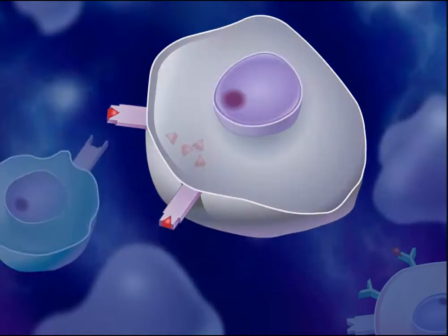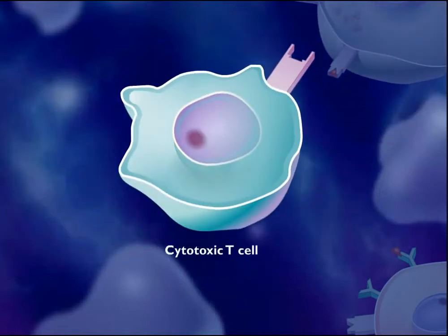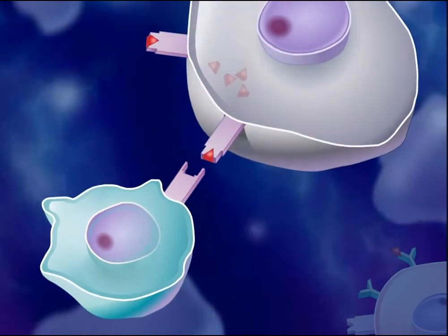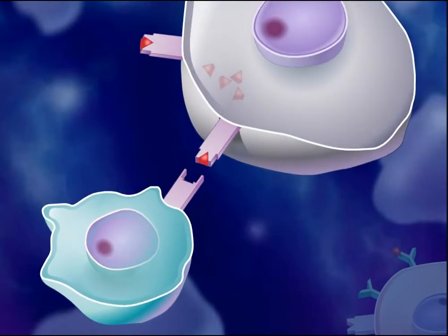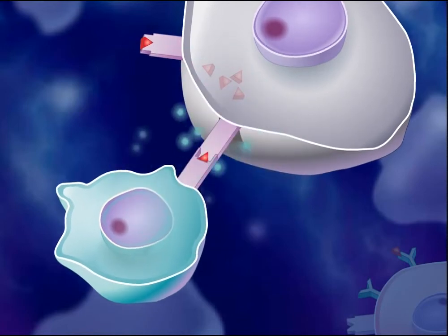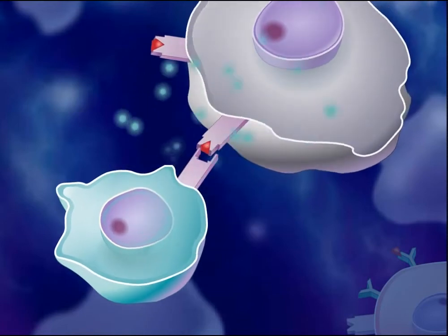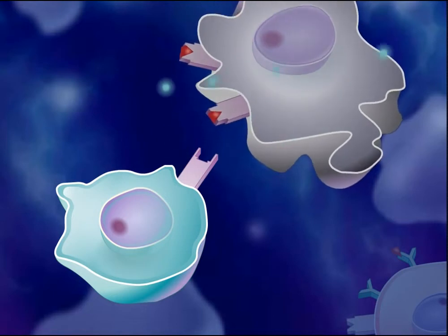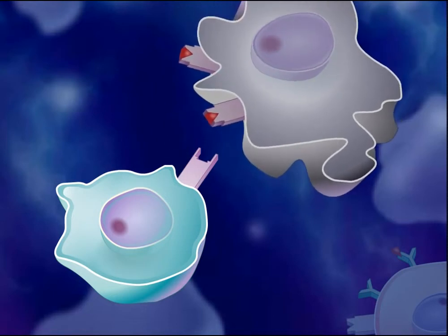The body makes millions of different types of cytotoxic T-cells, and each type is able to recognize a particular antigen. The cytotoxic T-cells capable of recognizing the antigen displayed on the surfaces of infected cells bind to those infected cells and produce chemicals that kill them. Death of the infected cells results in destruction of the pathogen.